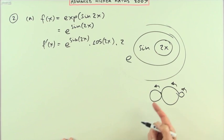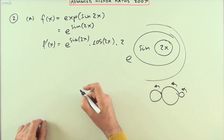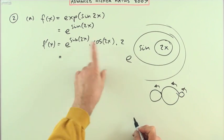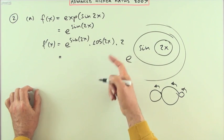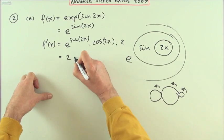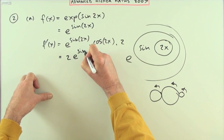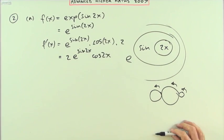Tidy this up. What have we got? It's not good leaving that 2 next to this because that could end up looking like the cos is acting on 2, so I'll take that to the front. So what we've got: 2, whichever you like—I think I'll write 2 e to the sine 2x, cos 2x. That would do.